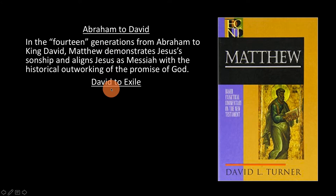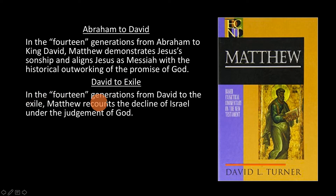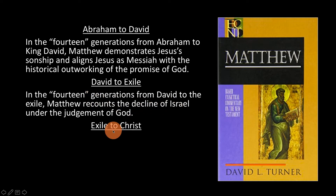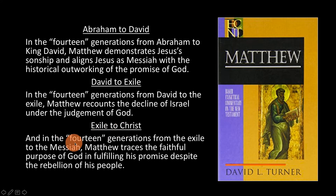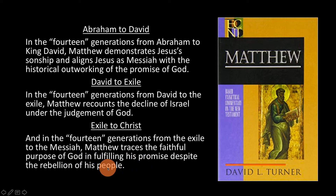Why does he go from David to the exile? Turner writes: 'In the 14 generations from David to the exile, Matthew recounts the decline of Israel under the judgment of God.' And for the last column — exile to Christ — he notes: 'In the 14 generations from the exile to the Messiah, Matthew traces the faithful purpose of God in fulfilling his promise despite the rebellion of his people.'